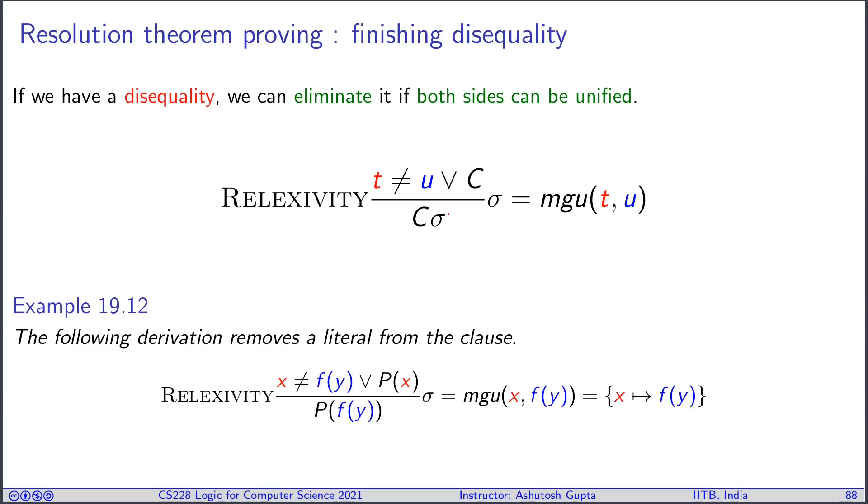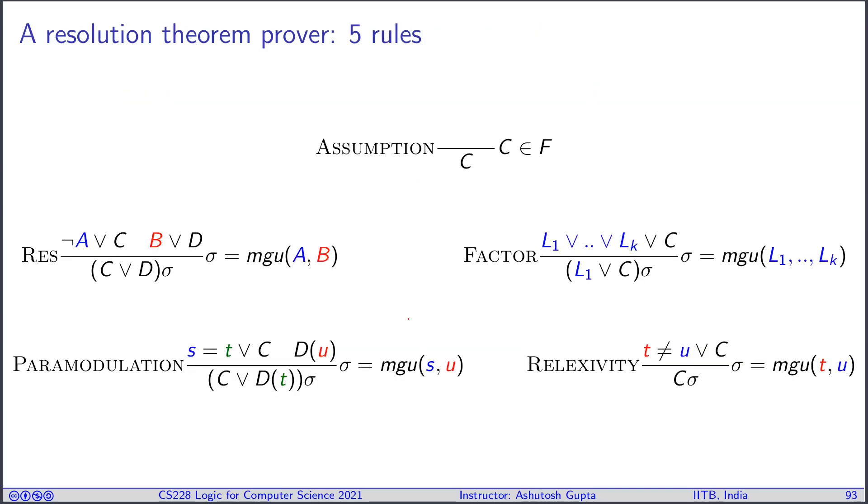The following derivation removes the literal from the clause. For example, you have x not equal to F(Y). You can simply unify F(X) and x, and you say x maps to F(Y), and you say P(F(Y)). That's what you derive out of this application of the reflexivity rule. So we have seen five rules, and there's no other rule to learn. Using these five rules, I can derive anything in first-order logic I want to derive.